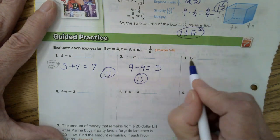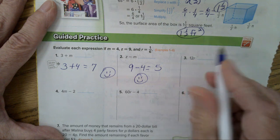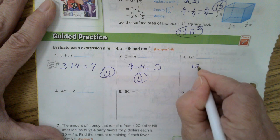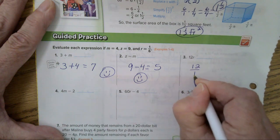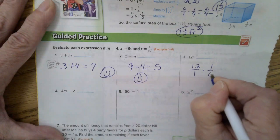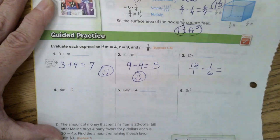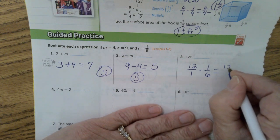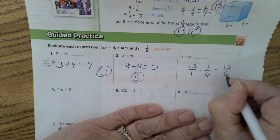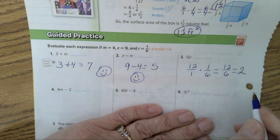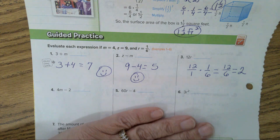This says 12 times R. R is the fraction 1 sixth. So, I'm going to write 12 as a fraction, times R, which is 1 sixth. You can simplify before you multiply, or multiply straight across. 12 times 1 is 12. 1 times 6 is 6. 12 over 6 equals 2. The answer is 2.